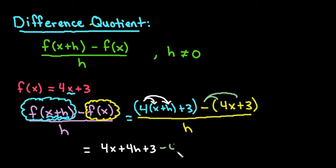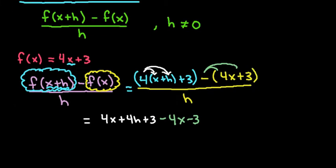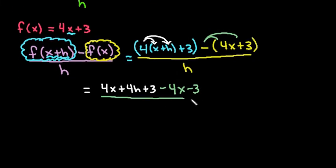So we would have minus 4x minus 3, and this is all going to be over h. And now, it's just a matter of simplifying the top part. So if we simplify the top part, we can see that 4x minus 4x cancels out.